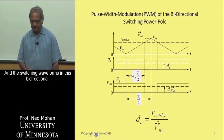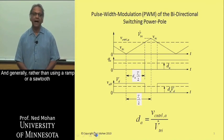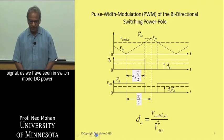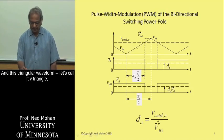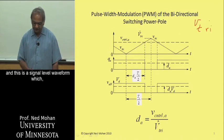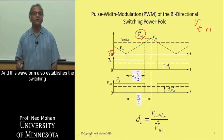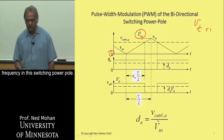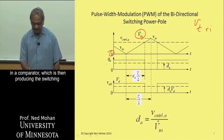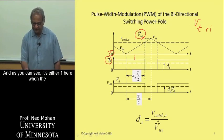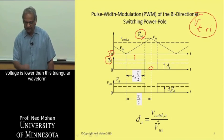The switching waveforms in this bidirectional switching power pole are shown in this diagram. Rather than using a ramp or sawtooth signal as we had seen in switch mode DC power supplies or boost converters, here we use a triangular waveform. Let's call it V-triangle — this is a signal-level waveform varying between 0 and some peak value V-triangle-hat. This waveform establishes the switching frequency in this switching power pole. It is then compared with a control voltage in a comparator, producing the switching signal Q_A — it's 1 when the control voltage is higher and 0 when the control voltage is lower than the triangular waveform.